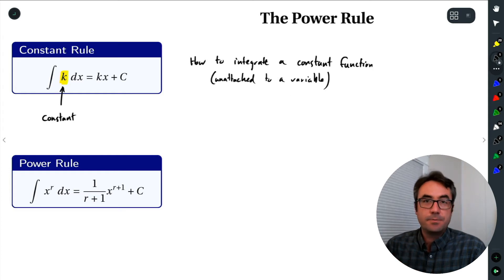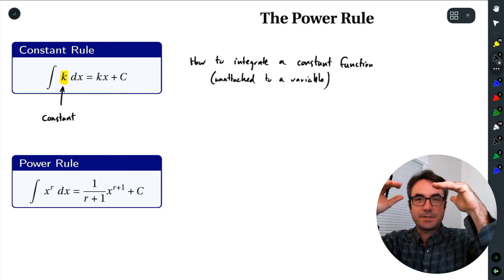All right, so that's not too bad. Integrating a constant k, we get k times x plus c. So notice that when we integrate, what we're kind of doing is we're kind of building our function up in a way. So starting with k, we're getting k times x plus c.